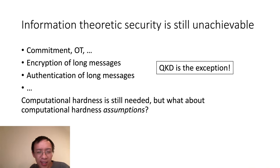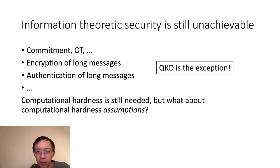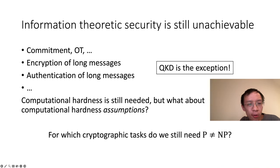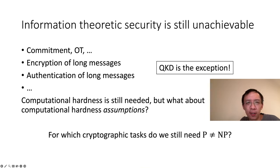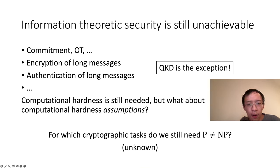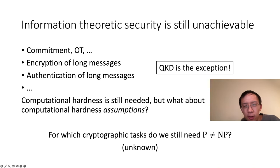Can we just prove computational hardness to exist instead of having to rely on unproven assumptions? In this work, we will be focusing on a more concrete question: for which cryptographic tasks do we still need P not equal NP? Since P versus NP is obviously a very significant barrier for complexity theory, of course we do not resolve this problem. Nevertheless, we do make some progress towards answering this question.